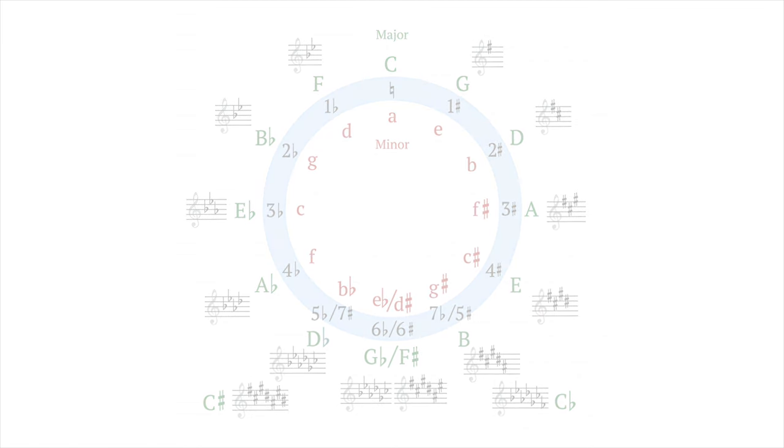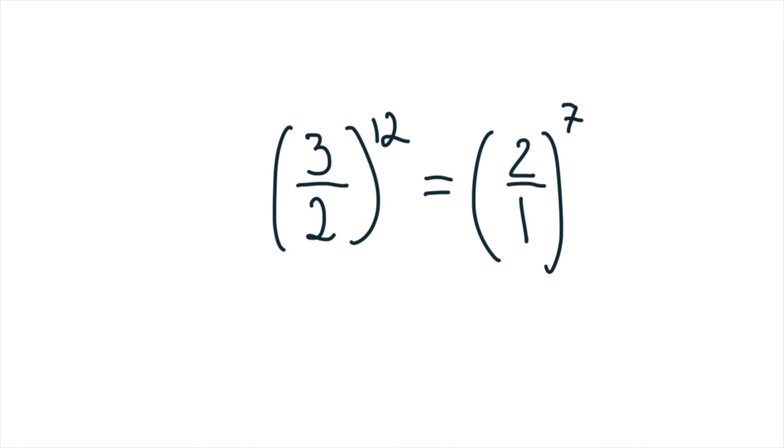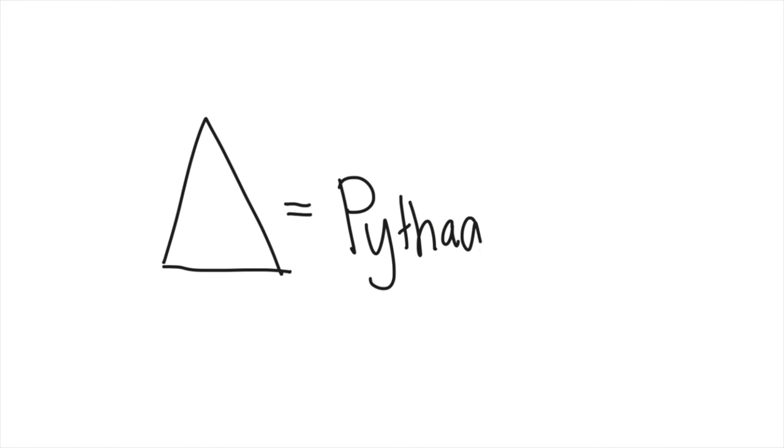But Pythagoras discovered that there was a problem in the system. Twelve fifths above each other should be the same as seven octaves on top of each other, but it's not. It's a little delta, it's a little interval, it's a little difference. And that difference is called Pythagorean comma.